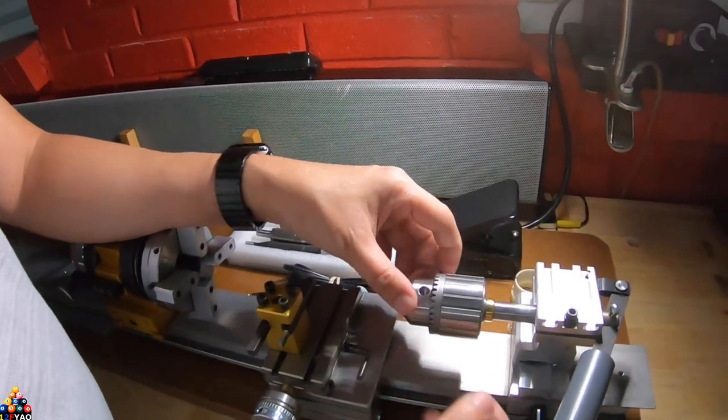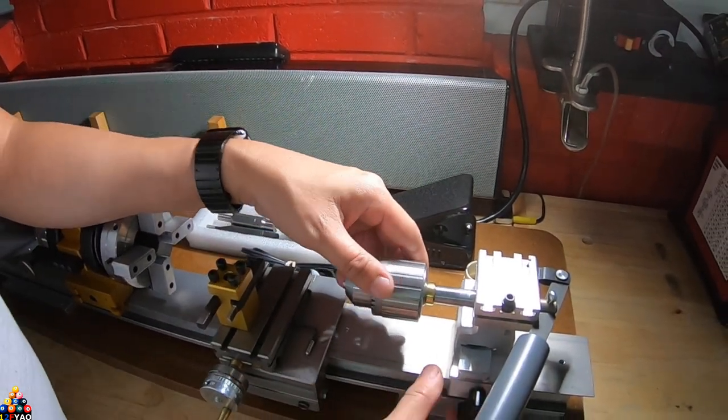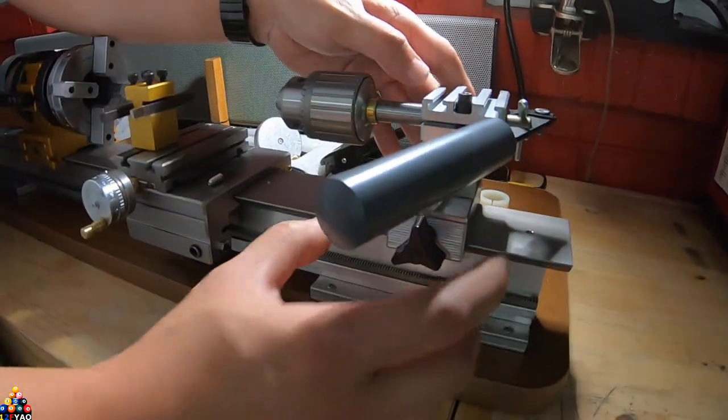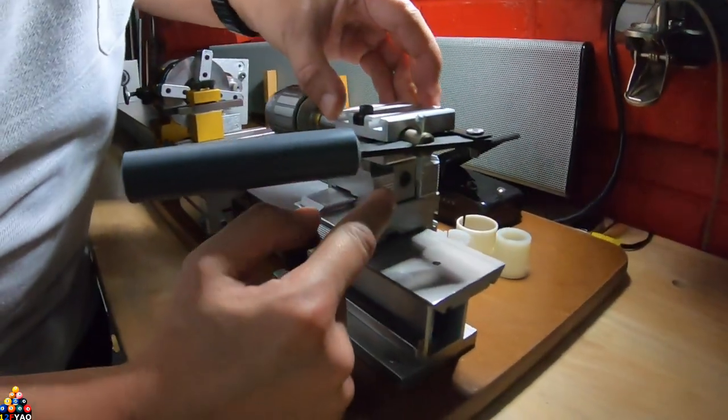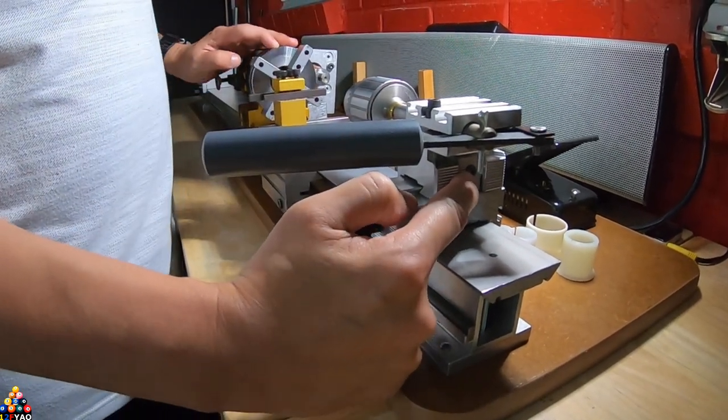This is a modified tail stock with a professional half-inch drill chuck. You can actually loosen this and slide it around and over here this is where you would do your centering for your tail stock to your large bore headstock.